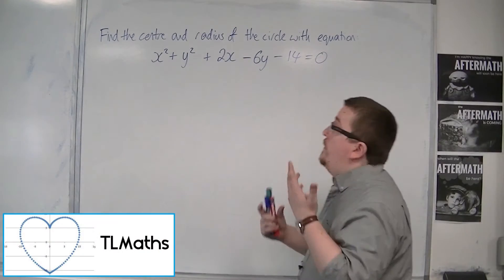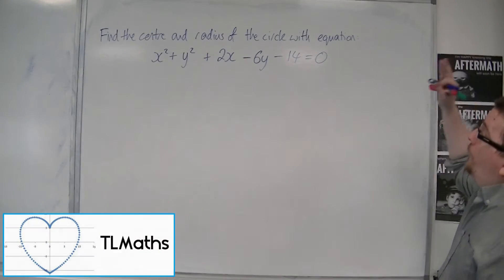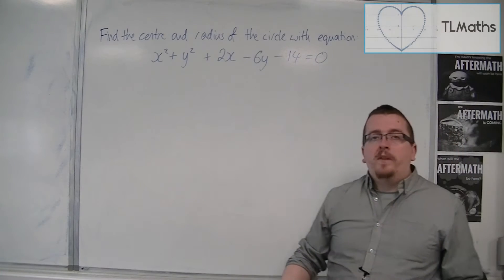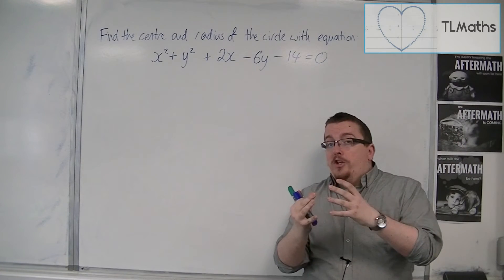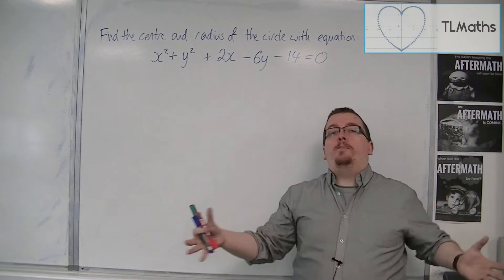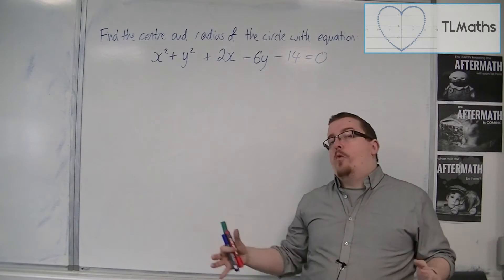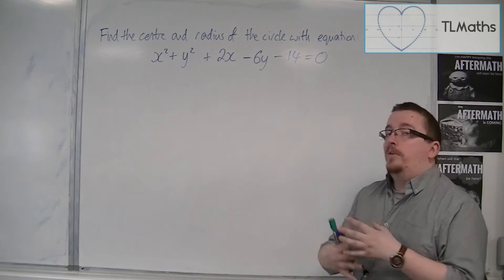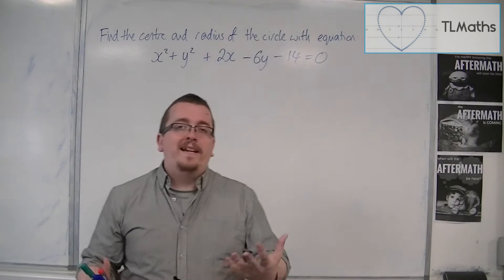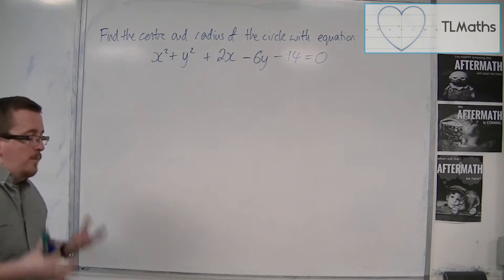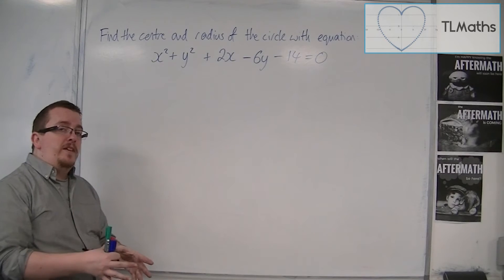So let's say I want to find the center and radius of the circle with this equation. Now, the equation in this format has been expanded out, and we want to get it back into the completed square form. So this relates directly back to that process that we saw right at the beginning of this section.